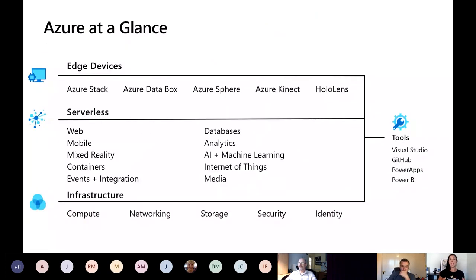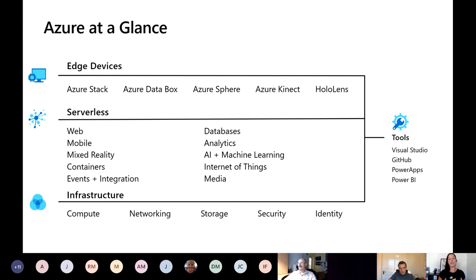I want to look at Azure at a glance — this is kind of a 10,000-foot view of what we offer. You're aware of many services in the marketplace. How many of you have a smart device like a watch? Those are all edge devices — and we offer Microsoft ones too: Azure Stack, the Azure Data Box, Azure Sphere, Connect and the HoloLens. Those all connect in and consume data, bringing it to the cloud. We also provide tools to manipulate and connect to your data: Visual Studio, Visual Studio Code, GitHub, Power Apps, and Power BI.